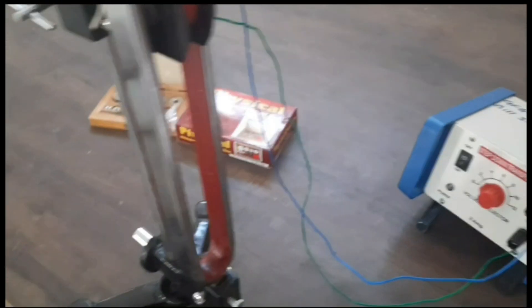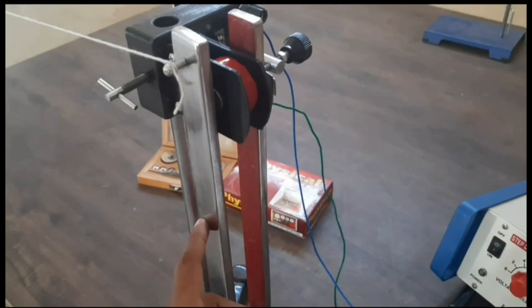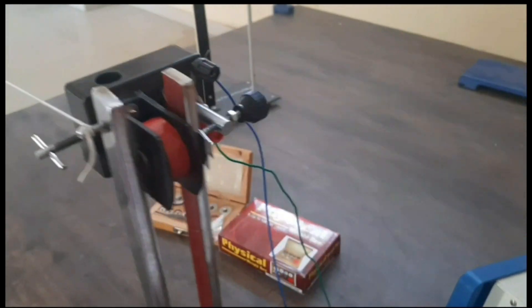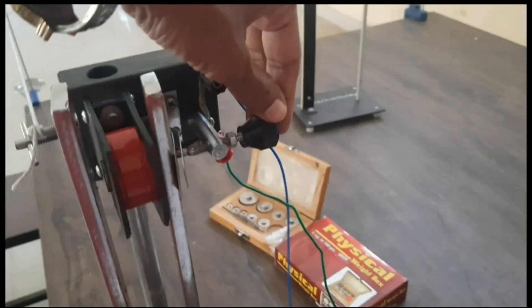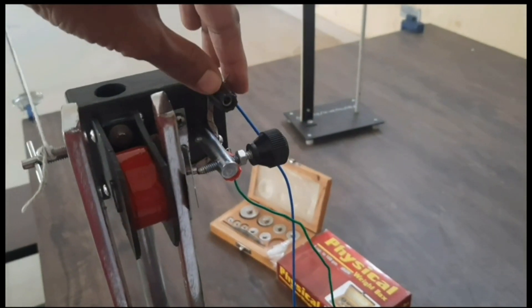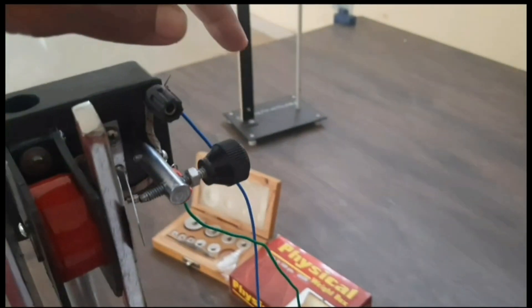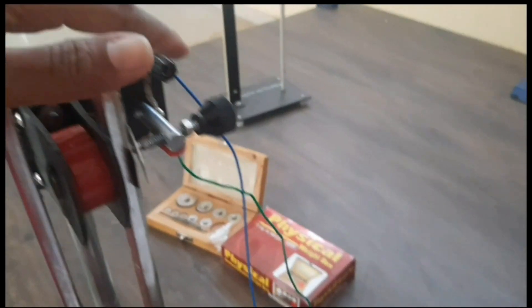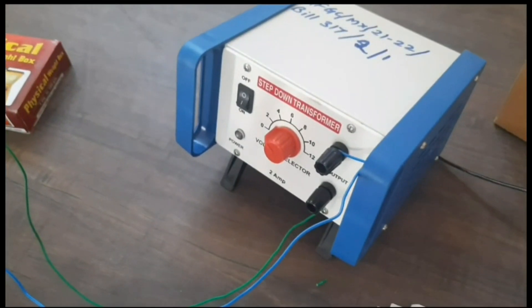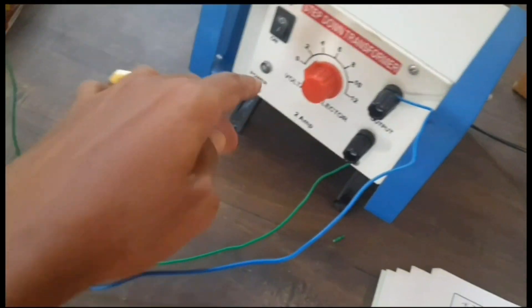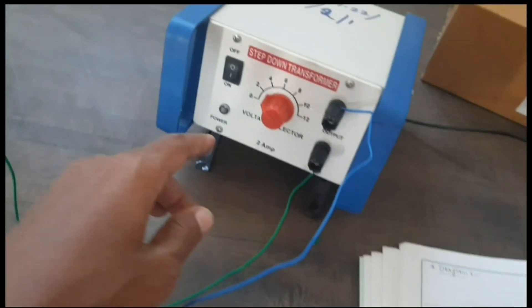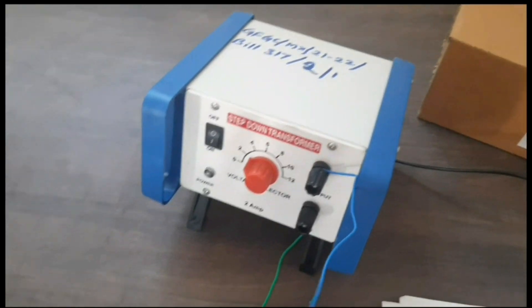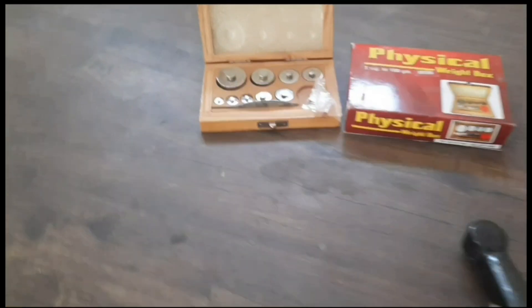The apparatus required as I said is a tuning fork, and this is the electromagnet. Here is the screw to produce spark, and here are the two terminals we have to connect to the transformer. This is the step-down transformer which has a voltage range of about 0 to 12 volts.